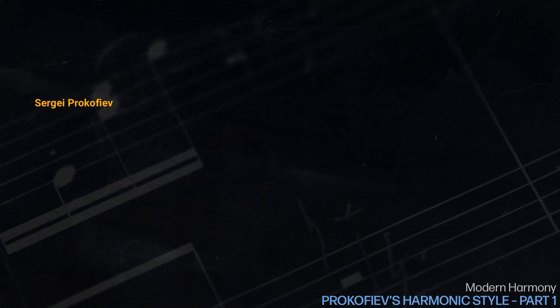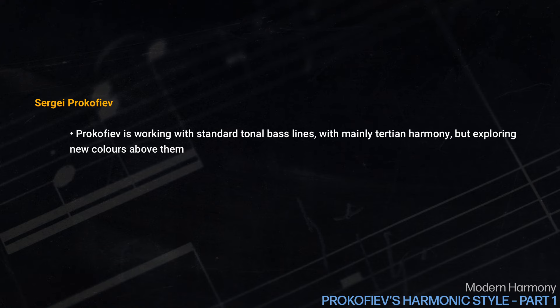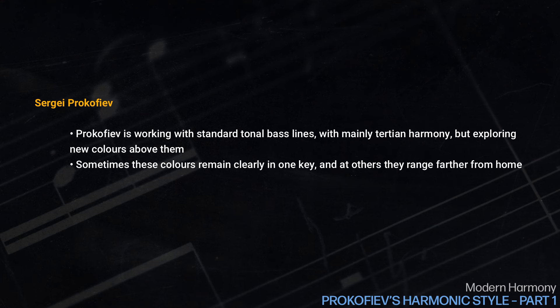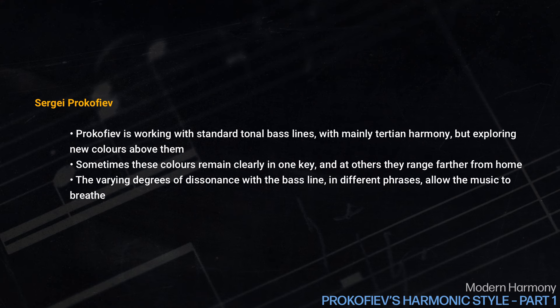So what Prokofiev does here is to work with standard tonal bass lines, with mainly tertian harmony, but exploring new colors above them. Sometimes these colors remain clearly in one key, and in others they range farther from home. The varying degrees of dissonance with the bass line in different phrases allow the music to breathe. In our next lesson, we'll look at some other kinds of harmonic exploration in Prokofiev's music.